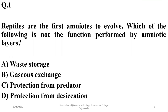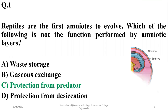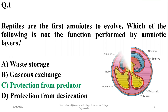But protection from predators is not the function of amniotic layers such as amnion, chorion, or allantois. Protection from predators requires other strategies at the adult level.